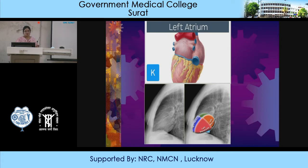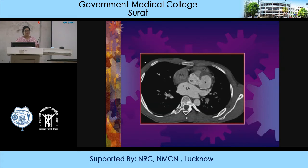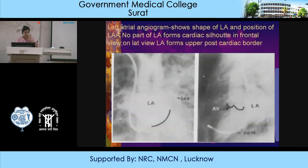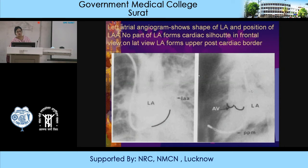On an axial view, you can see the left atrium receiving the pulmonary veins, the right atrium, and the right ventricle situated anteriorly. The left atrial angiogram shows the shape of the left atrium and where the left atrial appendage is seen. No part of the LA forms the cardiac silhouette on the frontal view, but on the lateral view it forms the upper posterior cardiac border.